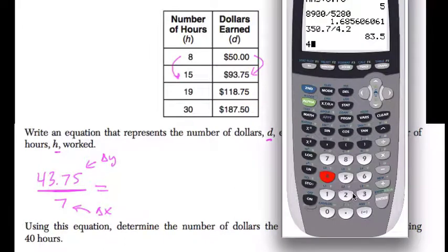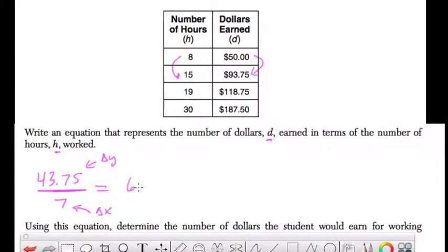We can simplify this. We get 43.75 divided by 7, which equals 6.25. That's the amount of dollars, delta Y, for every hour, delta X.